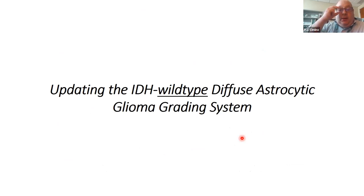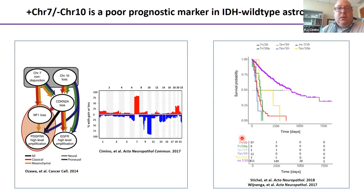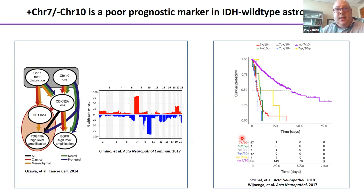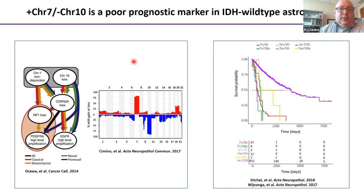The minority type among grade 2 and 3 diffuse gliomas is IDH wild type diffuse astrocytic glioma. One of the first things people started to look at was going beyond histology, examining molecular profiles of histologically lower-grade astrocytic tumors that are IDH wild type, which may confer more aggressive behavior. Early studies applied genetic or genomic markers common in glioblastoma to lower-grade histology tumors.